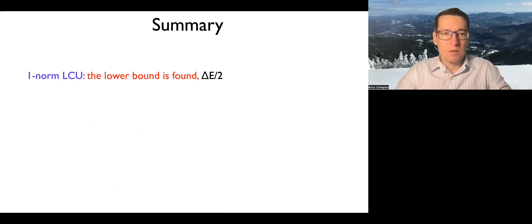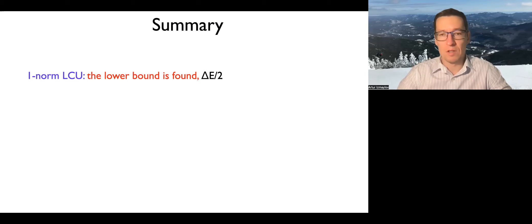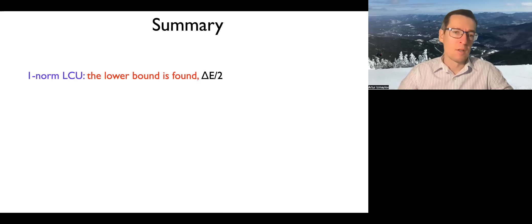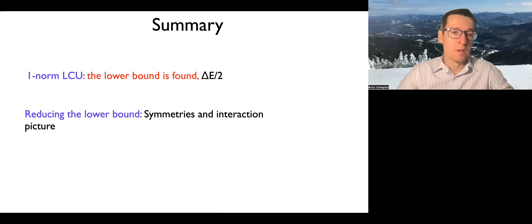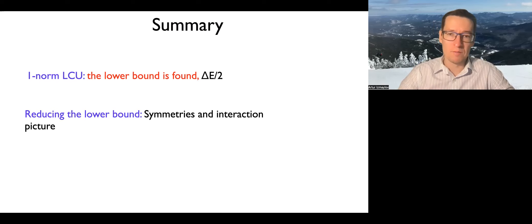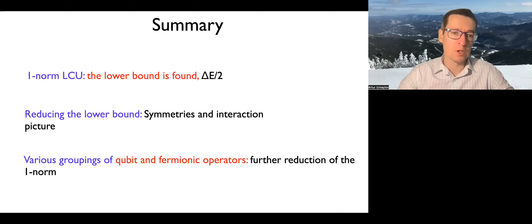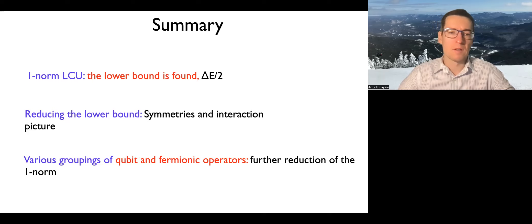To summarize: we have an LCU one-norm lower bound related to the spectral range — if you can find the spectral range, you know how low you can go with the one-norm. Reducing this lower bound can be done by changing the Hamiltonian, subtracting symmetries, or switching to the interaction picture. Various grouping techniques — whether in qubit or fermionic operators — further reduce the one-norm and allow you to obtain better decompositions.